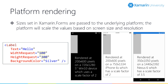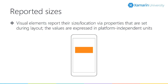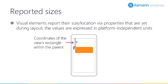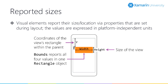After the layout calculation happens, the view will end up having some size — it may or may not be the size the view requested, but at runtime it will have a size. Those values are available to your app: X and Y tell you where the thing got laid out within its parent container, and width and height tell you the size it ended up. These are in platform-independent units, not physical pixels. There's also a convenience property that wraps all four values into a single rectangle.